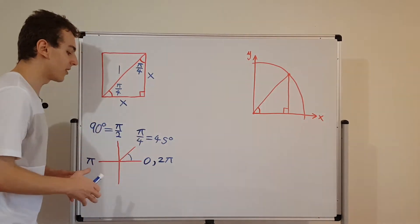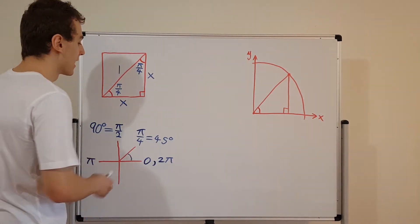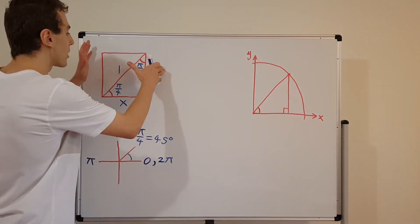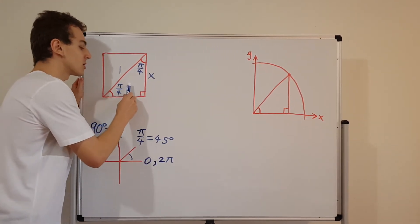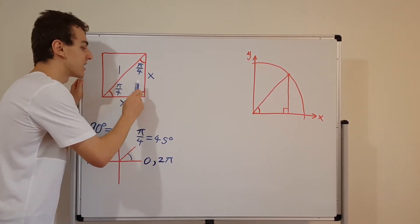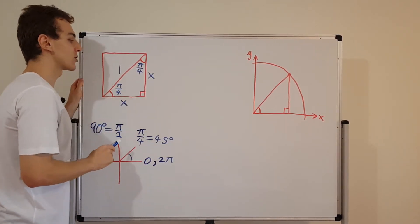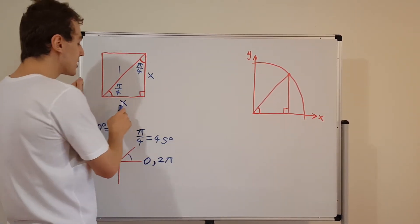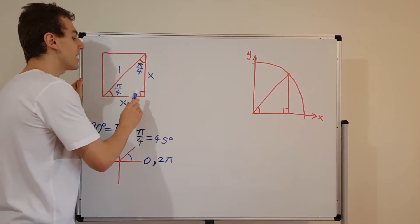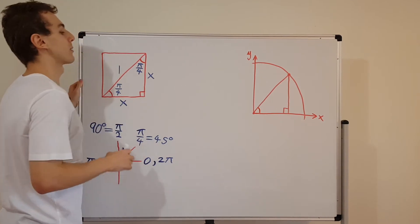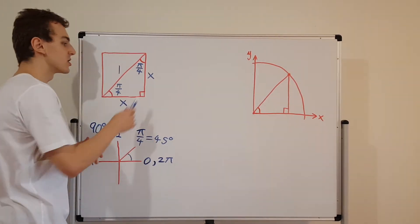We're using radians because they are more universal and more convenient — degrees are a little more arbitrary, just slicing up the circle into 360 chunks. But radians are actually defined based on the radius of the circle. So here's what we have: we've taken this square, cut it in half, and formed an isosceles right triangle. Now let's solve for the side length x using Pythagoras' theorem.